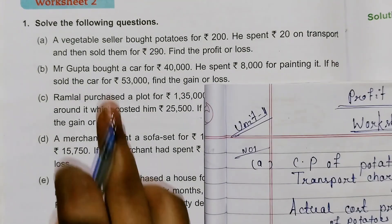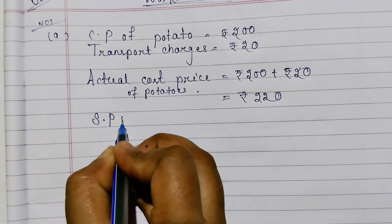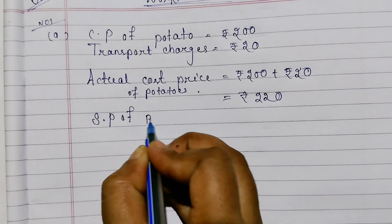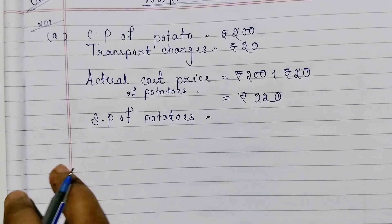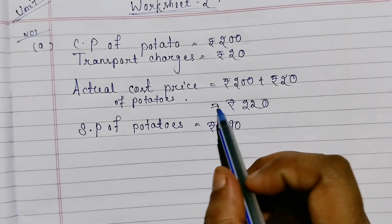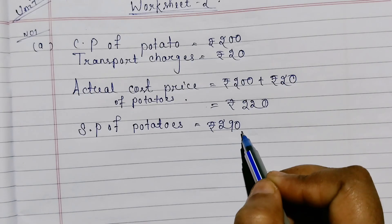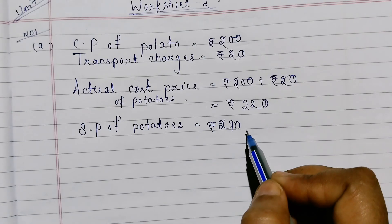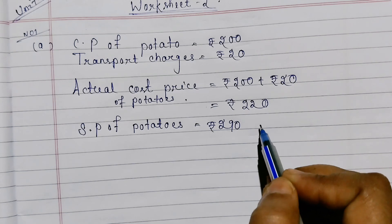Selling price of potatoes is 290 rupees. So cost price is 220 rupees and selling price is 290 rupees. Since selling price is more than cost price, the vegetable seller makes a profit.